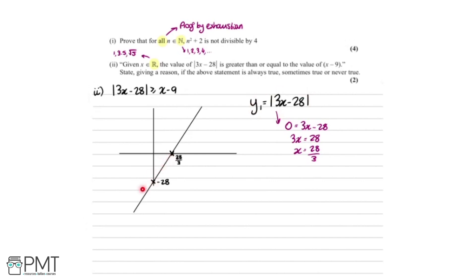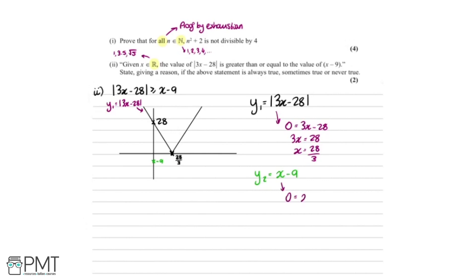So we draw the line y = 3x − 28. But since we have the modulus, anything below the x-axis gets flipped up, creating a V-shape. The y-intercept reflects from −28 to +28. Now using a different color, we sketch y₂ = x − 9: its y-intercept is −9, and its x-intercept is at x = 9, which is just before 28/3 ≈ 9.3. Joining those points gives us the line y₂ = x − 9.